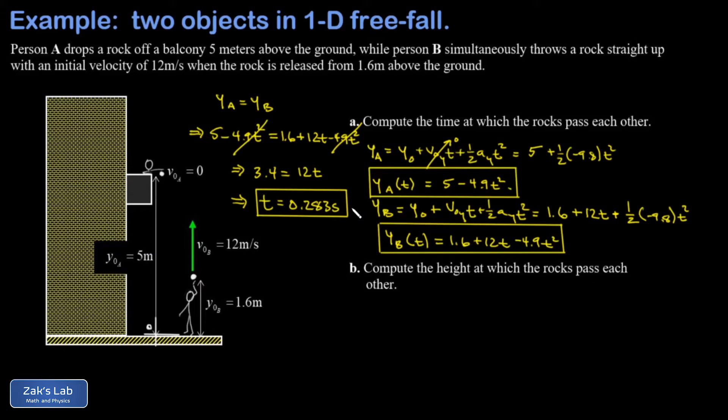In part B, I'm asked to find the height at which the rocks pass each other. All we have to do is take that time of 0.283 seconds and plug it into either position function—they should both give the same answer. I prefer to plug into both equations because it provides a nice check on our work. Let's look at the height of rock A evaluated at 0.283 seconds.